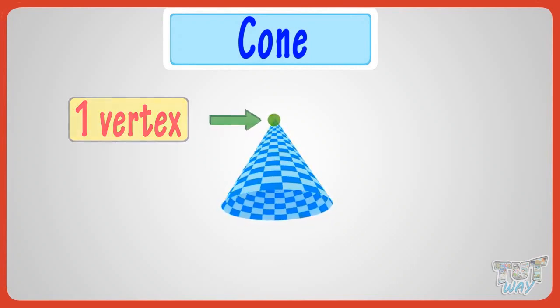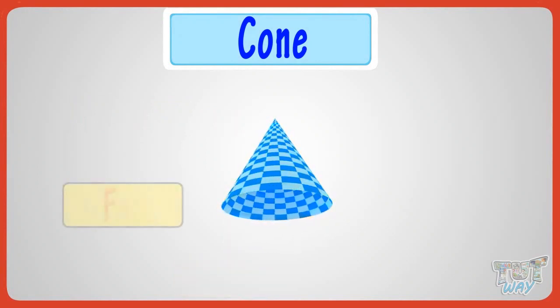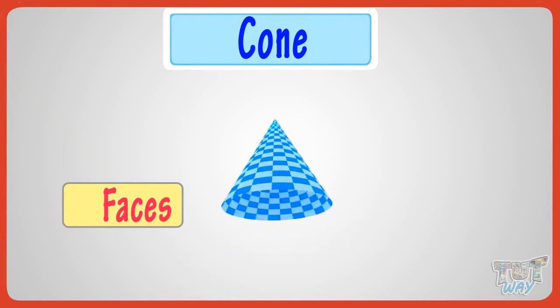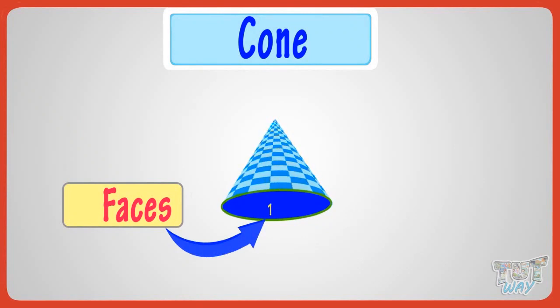It has only one edge, which is round in shape. Now let's see its faces. One of the faces is round-shaped on its bottom. The other face is curved surface of the cone that wraps around it.